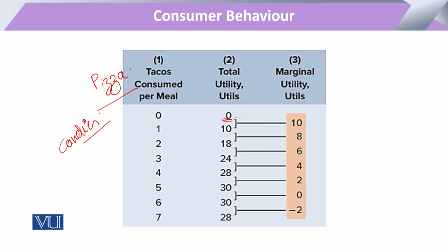As the utility maximizing rule we previously studied — whenever he takes an additional, second, or third unit of something, the utility for him is somewhat less than before. So when he consumes the second unit, his total utility becomes 18; third unit, 24; fourth unit, 28.